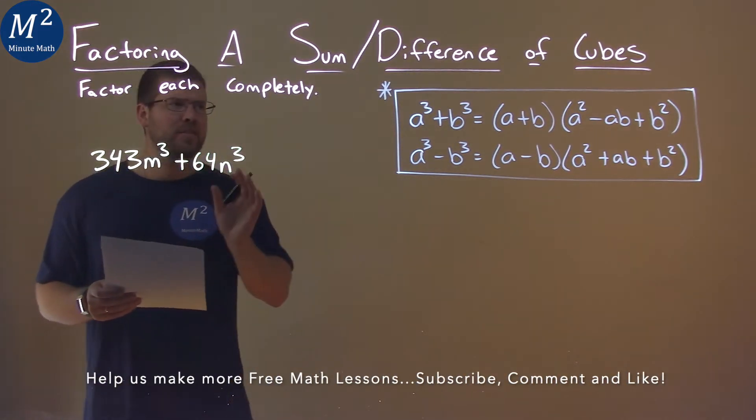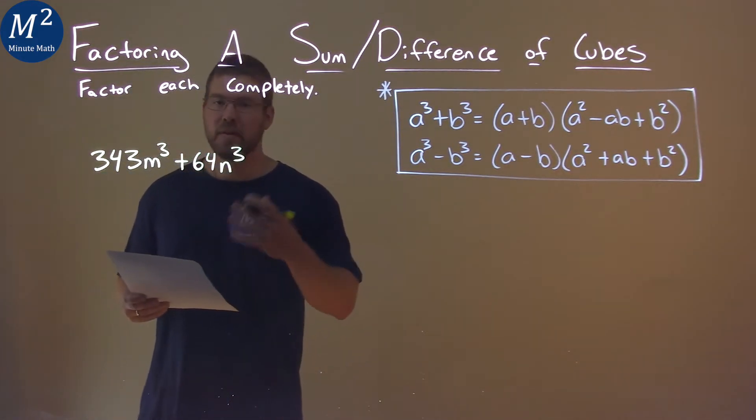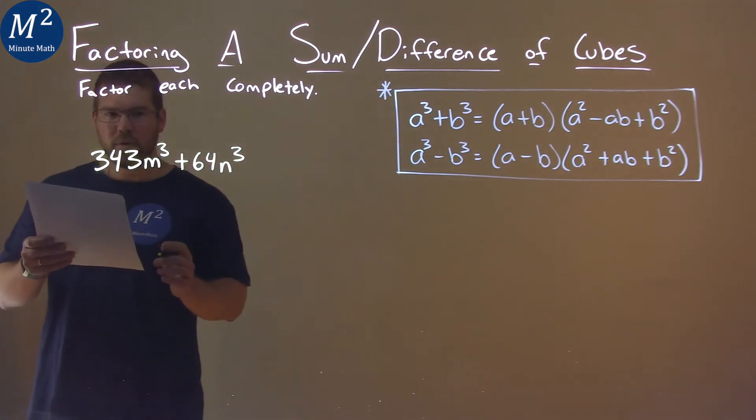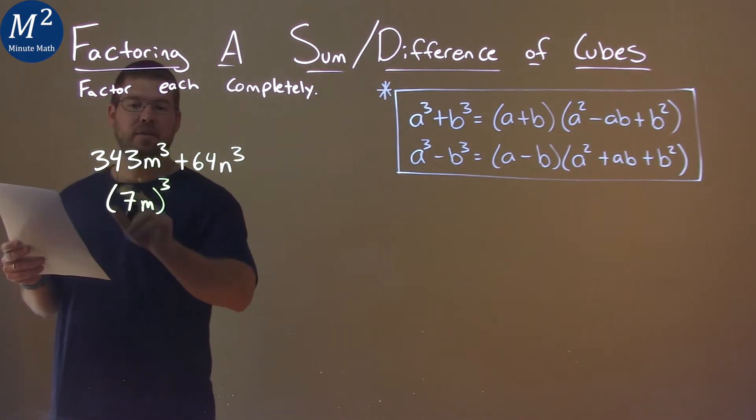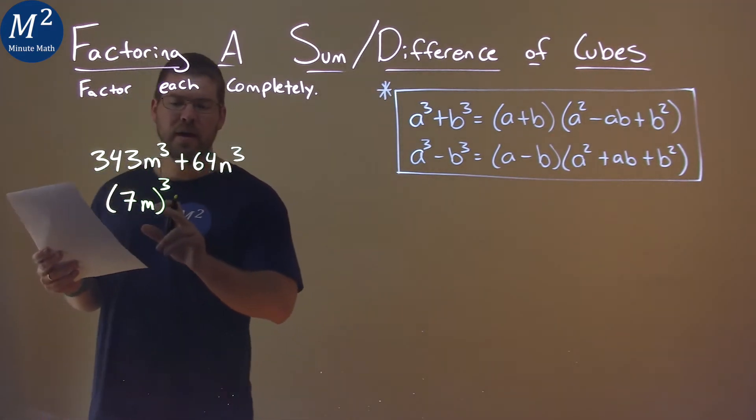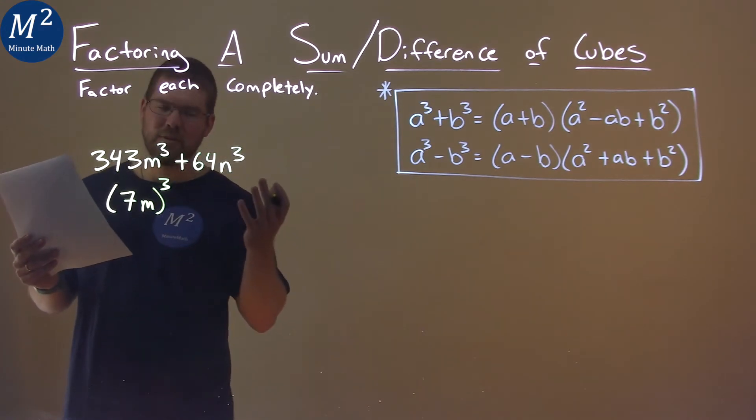Well, can we write this as a sum of two different cubes? And the answer is yes. 343m to the third power is the same thing as 7m all to the third power. 7 to the third power is 343 and m to the third power is m to the third power.